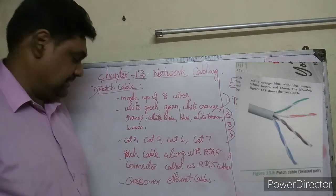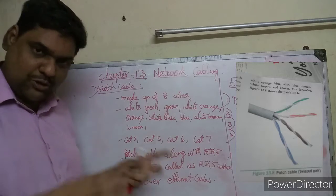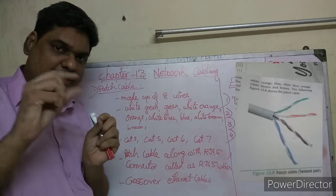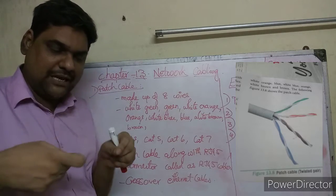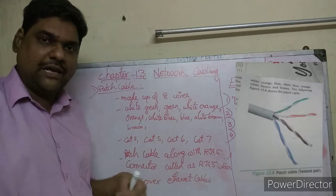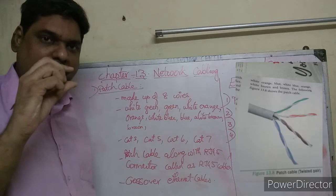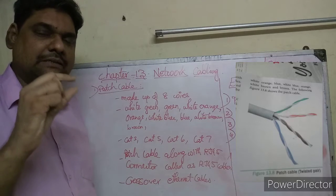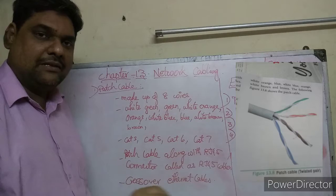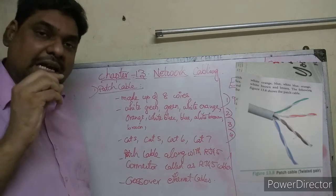The next component - at the other end of the patch cable there is a plastic transparent covering. That end connected to the CPU is a transparent plastic connector, and that end is called the RJ45 connector.